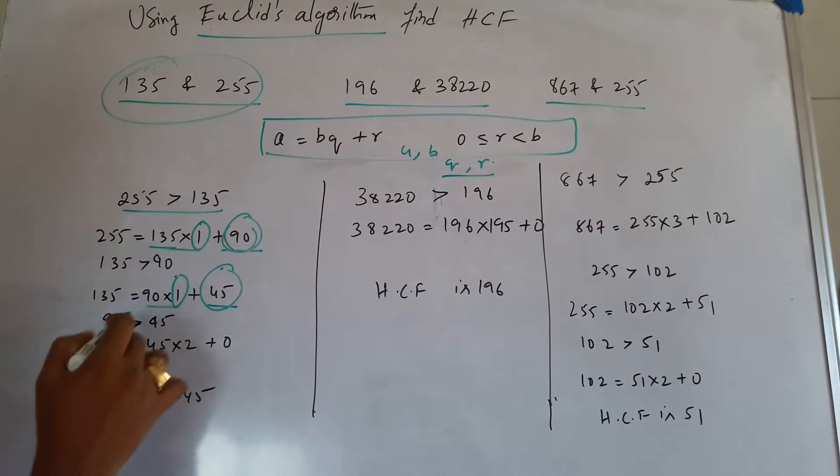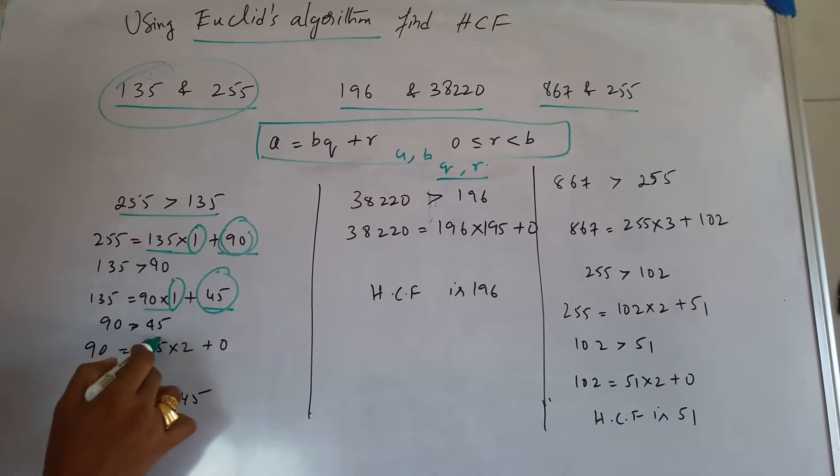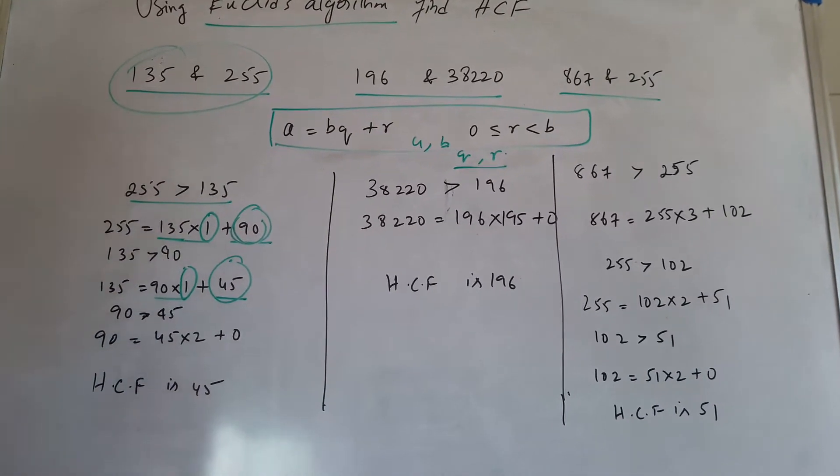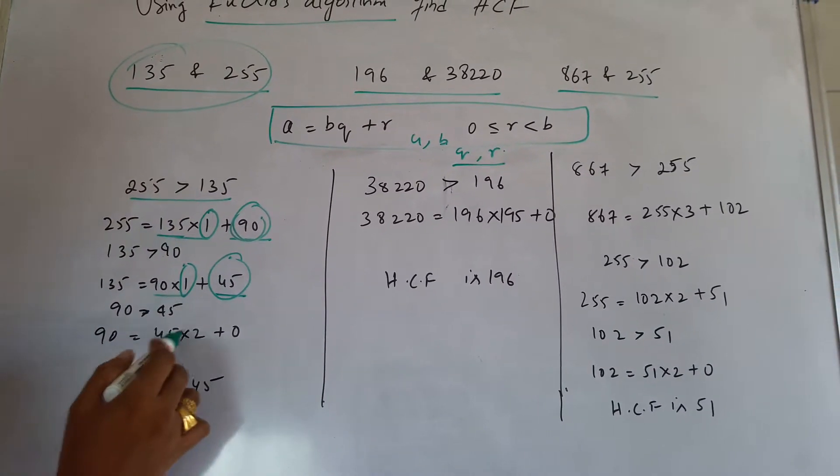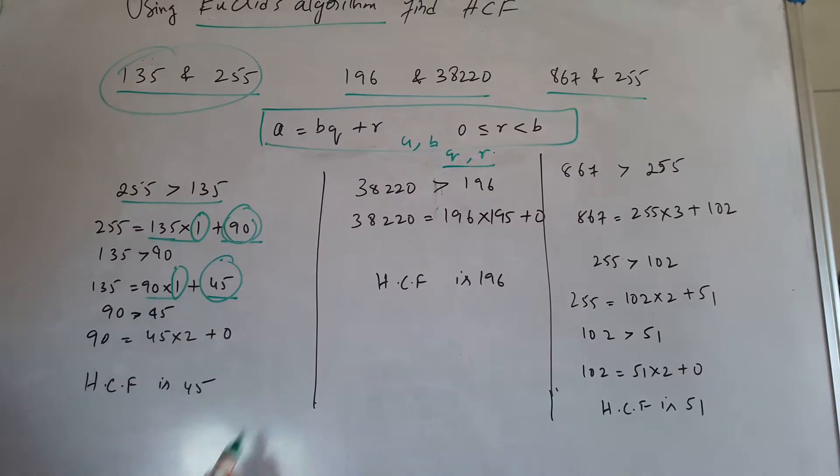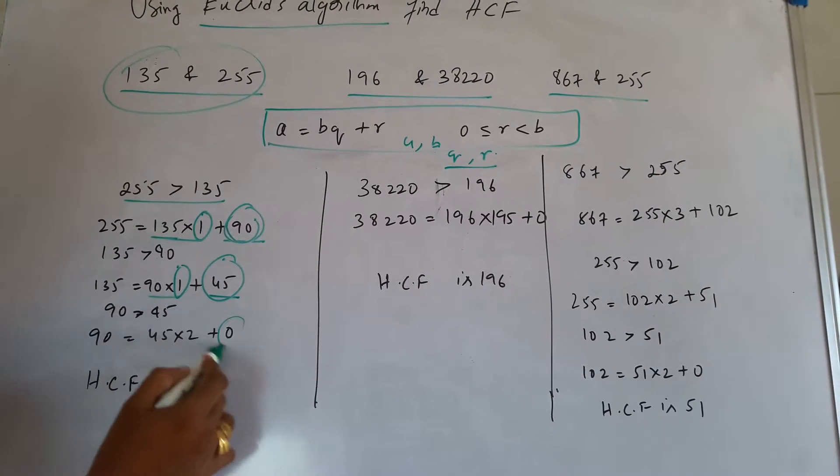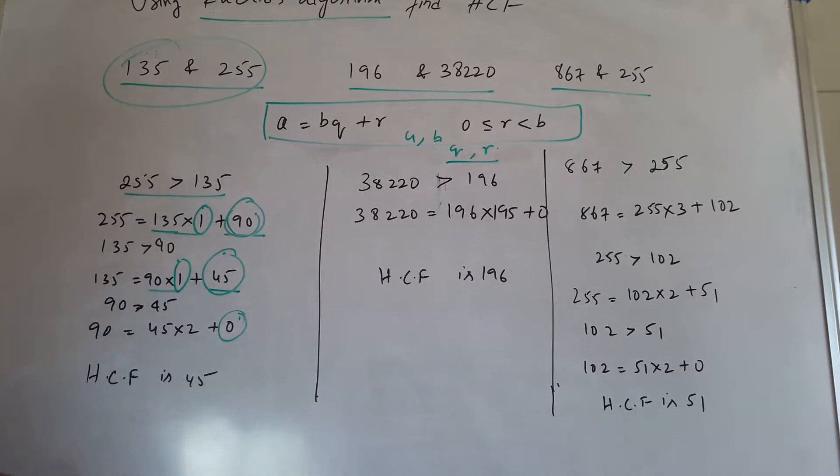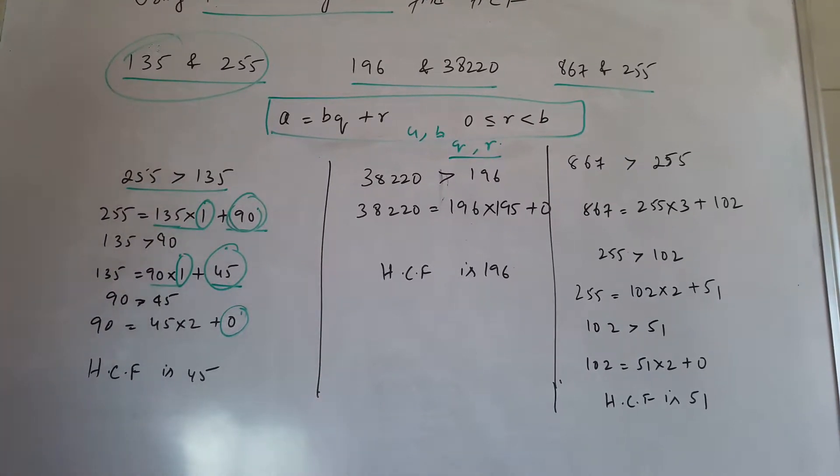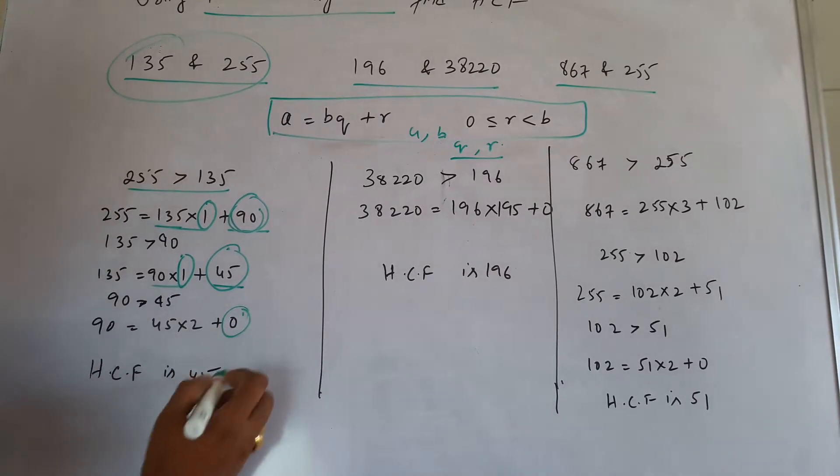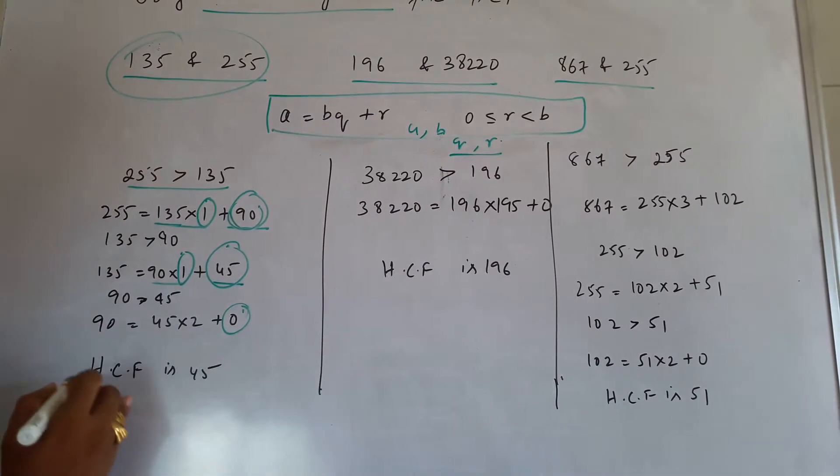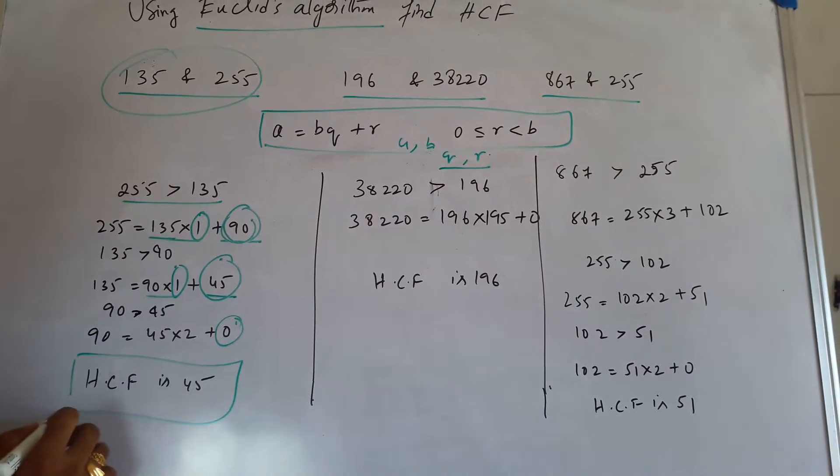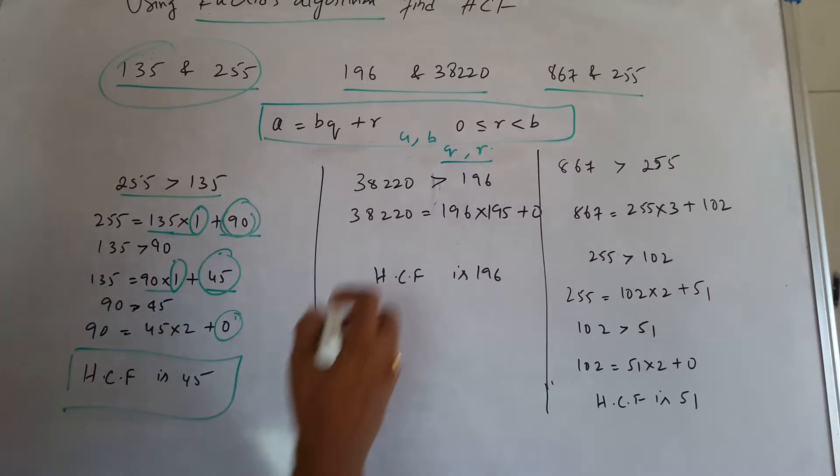Again we have 90 and 45. Again if you look at this, 90 can be put in 45 times 2 plus 0. We have to go on to the process where you can try to find the minimum value. So 0 being remainder, the highest common factor would be 45 for this.